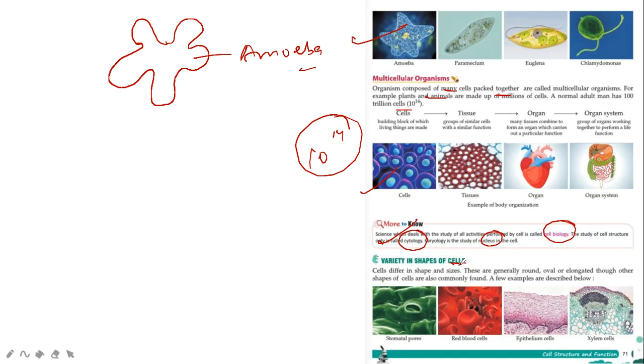Now cells have many different shapes. Cells differ in shape and sizes. These are generally round, can be oval, can be long, can be thin. So different types of cells are found.